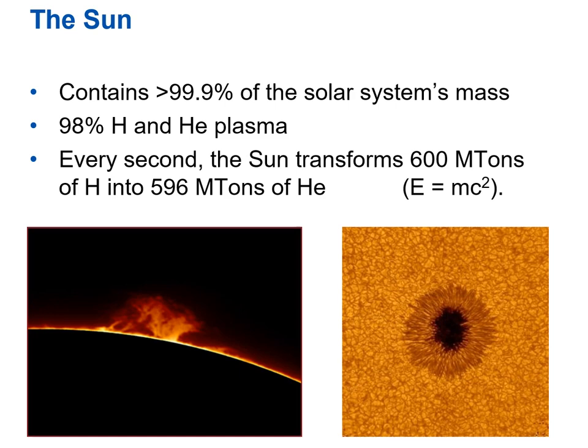Where does that mass go? Well, remember we've talked about in an earlier chapter by Einstein's equation — energy equals mass times the speed of light squared — that mass can be converted into energy. And this is where the heat and the light, all the energy comes from in the sun. It's that transforming hydrogen into helium and losing mass in the process.